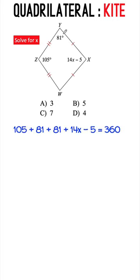And so, 105 degrees plus 81 degrees plus the angle here which is also 81 degrees plus 14X minus 5 equals 360 degrees.